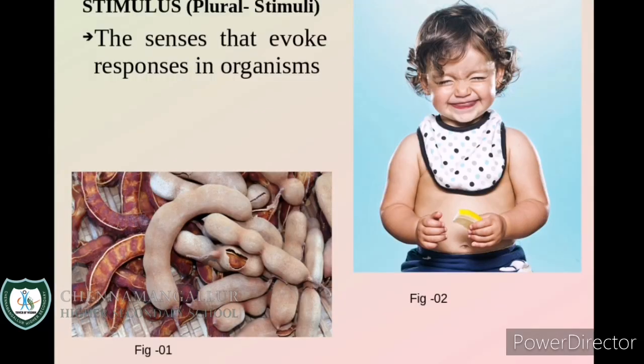We have just seen some pictures representing some actions, feelings and expressions like a scary girl, freezing man, man covers his ears, small kid's facial expression and so on. Biologically speaking, all these were generated because of the changes that happened in the situations and surroundings. Take the tamarind example — when we see tamarind, we automatically produce saliva. Our mouth waters. We may wish to taste it. The watering of the mouth is the response here.